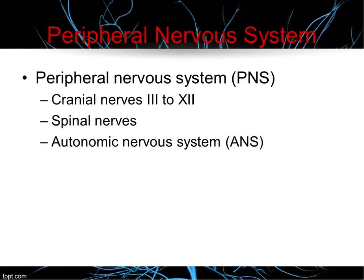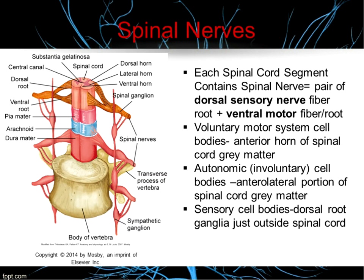That wraps up the central nervous system. Moving on to the peripheral nervous system, which contains cranial nerves 3 through 12, the spinal nerves, and the autonomic nervous system. Each spinal cord segment contains spinal nerves. A spinal nerve has two parts — a dorsal sensory nerve fiber root and a ventral motor fiber root. You've got to have both a sensory piece and a motor piece to have a full spinal nerve.